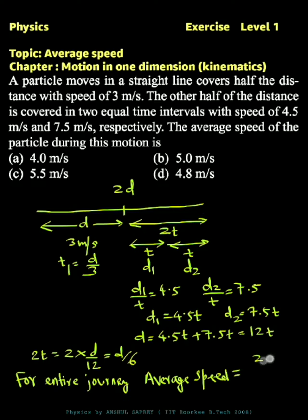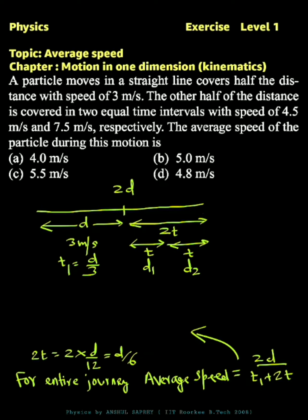average speed is equal to total distance by total time, which is t1 plus 2t. So this can be calculated as 2d divided by t1, which is d by 3, plus 2t, which is d by 6.